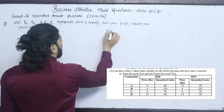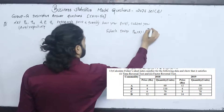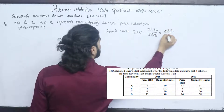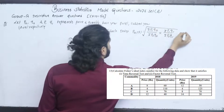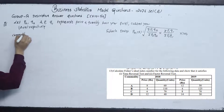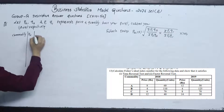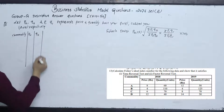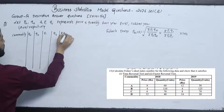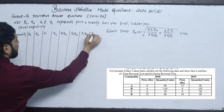Fisher Index Number P01 (Fisher) equals the square root of: summation P1Q0 upon summation P0Q0, multiplied by summation P1Q1 upon summation P0Q1. The columns are P0, Q0, P1, Q1.